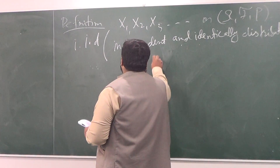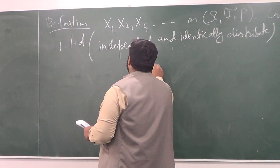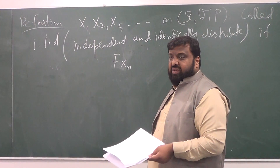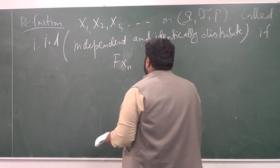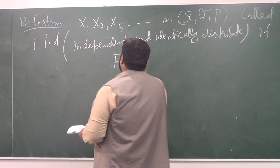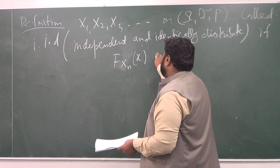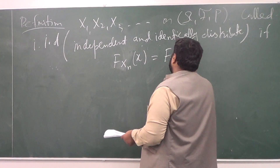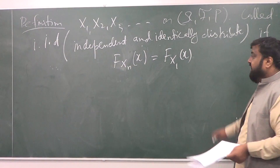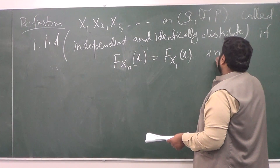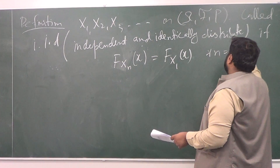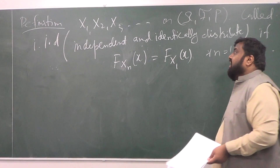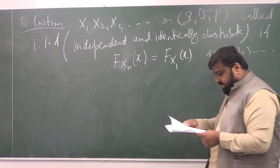These — all the terms of the sequence — have the same distribution function. In other words, if you compute F_m, this would be the same as, for example, F_{x1}, for all m equal to 1, 2, 3, and so on. So they basically have the same distribution function.